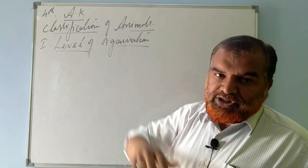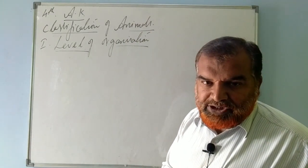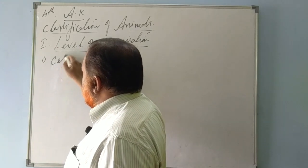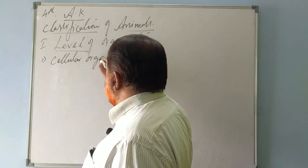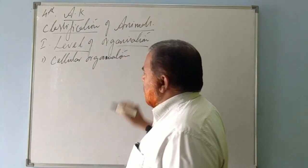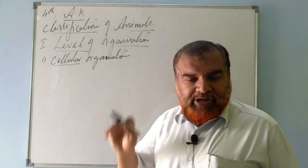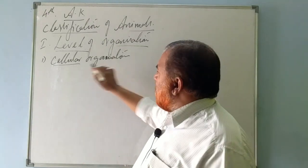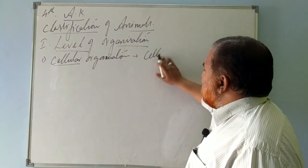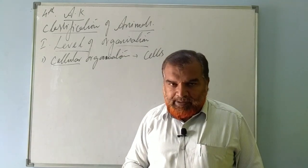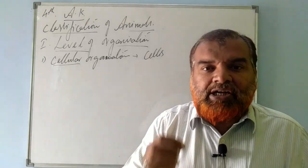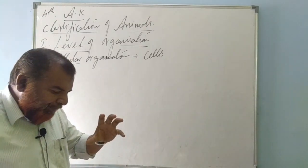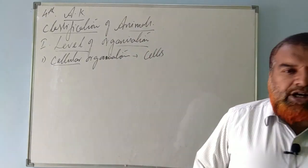Level refers to different categories, different types of organization. The first type is cellular organization. As the name suggests, it is of cellular level. You know the definition of cell: the structural and functional unit of life. You also know the definition of tissue: a group of similar cells performing a similar function, and these cells are of similar structure — that is, similar shape and size.